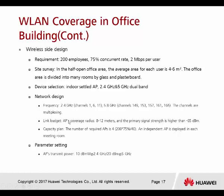For the link budget, the AP coverage radius is 8 to 12 meters, and the primary signal strength must be higher than −65 dBm. You need to make sure the signal strength in core areas is not weaker than −65 dBm. For capacity planning, the number of required APs is 4, calculated using the formula. An independent AP is deployed in each meeting room.